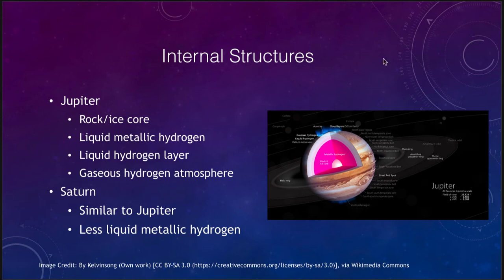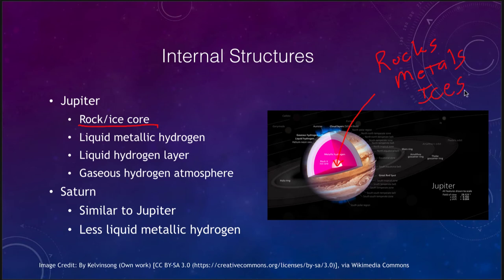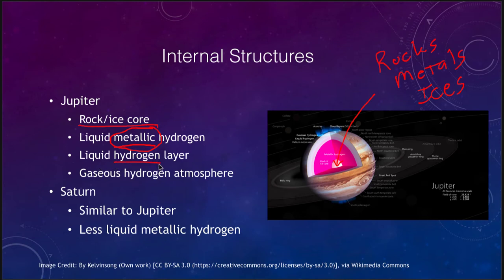Let's look at the internal structures of Jupiter and Saturn. Jupiter and Saturn have a rock and ice core at their center — rocky and metallic material way down inside, including some ices such as water, methane, and ammonia. The large layer for Jupiter is the liquid metallic hydrogen, and the metallic part is the key: it gives Jupiter a way to have an extremely strong magnetic field. Up a little further, we get plain liquid hydrogen — not under the extreme conditions that compress it into a metallic material, but still liquefied.